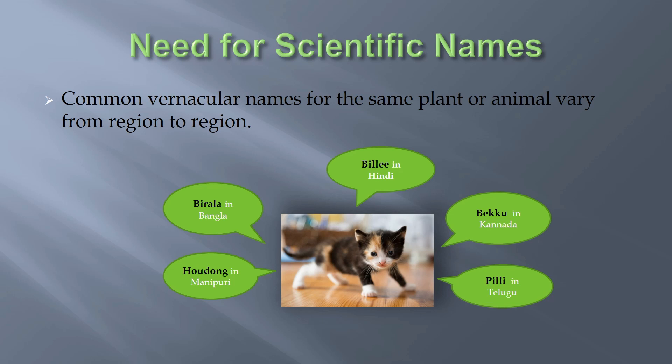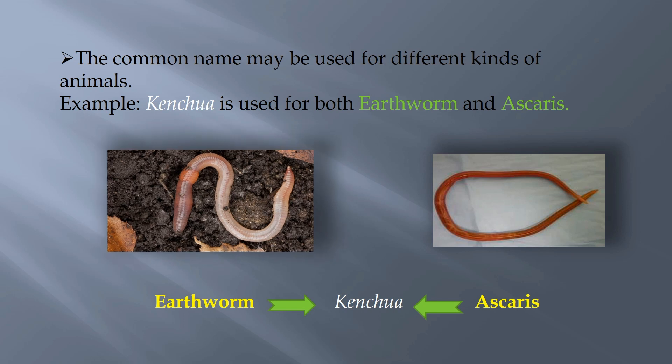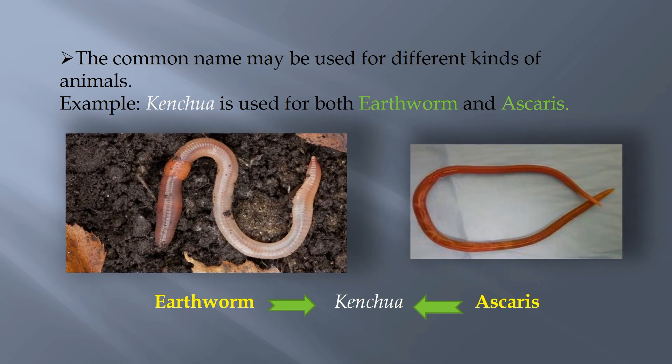The need for scientific names arises because common vernacular names for the same plant or animal vary from region to region. For example, the cat we know as Billy in Hindi is known by different names in other states of India and in other countries. Moreover, the common name may be used for different kinds of animals — for example, 'kenchua' is used for both earthworm and Ascaris.